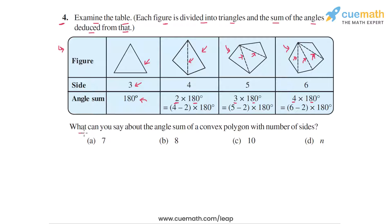The question asks: what can you say about the angle sum of a convex polygon with number of sides 7, 8, 10, and n? So we have to find a general expression for n. I will first help you understand how we calculate 2 into 180, 3 into 180, and 4 into 180 in more detail, and then we will come back and solve these four parts.